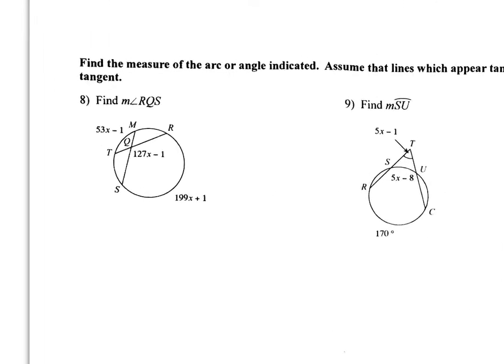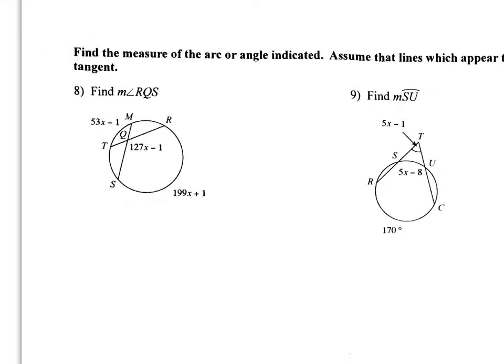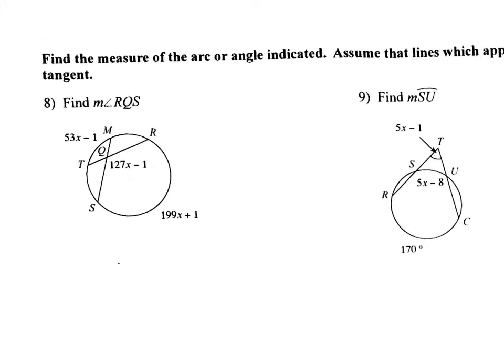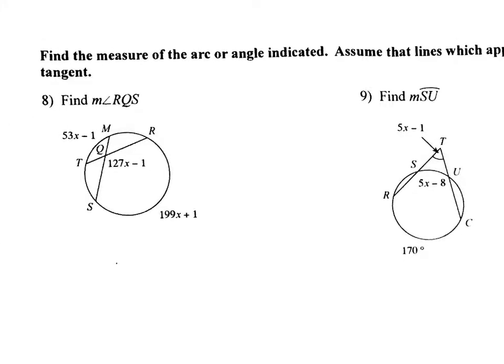Next page. Find the measure of the arc or angle indicated. So we're going to set up our equations the same way. The only difference is now I've got to go back and plug in. Okay. So let's take the first one. This one's on the inside. When you're inside, you add. Okay. So it's 53x minus 1 plus the 199x plus 1. Those are the two on the outside. Add. Divide by 2. And that equals my angle, 127x minus 1.